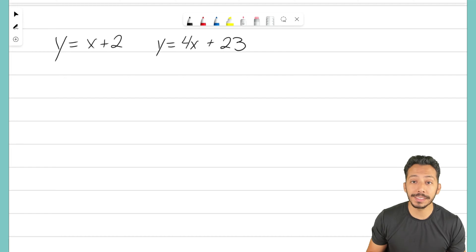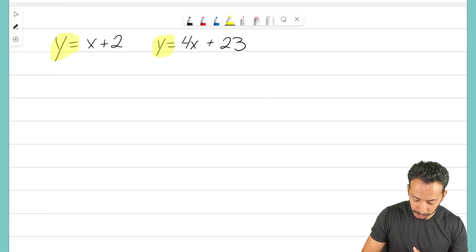And one method that we have is the equal values method. We use the equal values method when both equations are equal to the same variable. Notice that the first guy starts with y equals, and the second equation also starts with y equals.